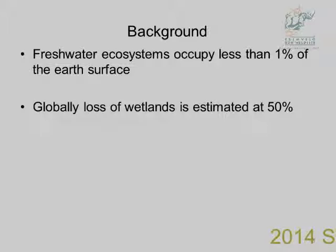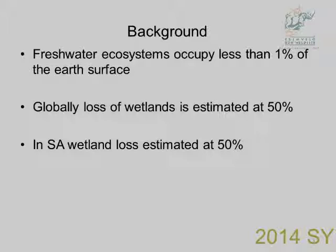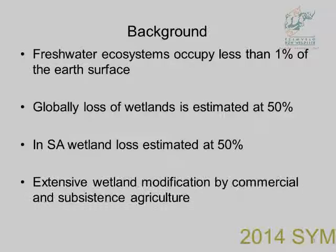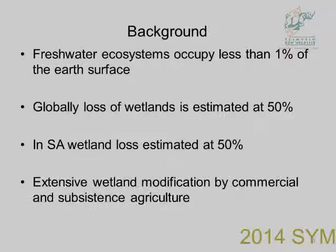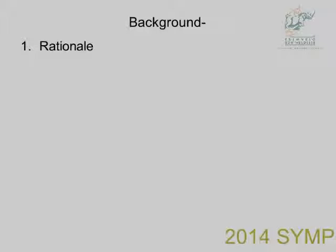Globally, the loss of wetlands is estimated at 50%. Some countries like Australia estimate they've lost 70% of their wetlands, and in America it's about 90%. Here in South Africa, even though there hasn't been a formal study done, the estimate is that we've lost 50% of our wetlands. Here in KwaZulu-Natal, we've lost about 34% to 50% of our wetlands in the province. One of the most important reasons why our wetlands get degraded is due to commercial and subsistence agriculture.